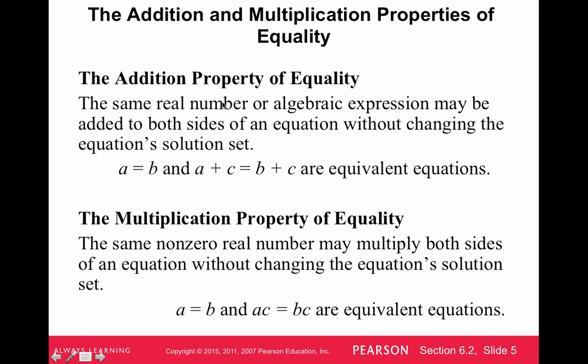The addition property of equality and the multiplication property of equality basically say if we have an equation like a equals b, and we add the same number or subtract the same number to both sides, it's still equivalent. And the same thing with multiplication and division. If we have an equation like a equals b and we multiply or divide both sides by a number c, then they're still equivalent.